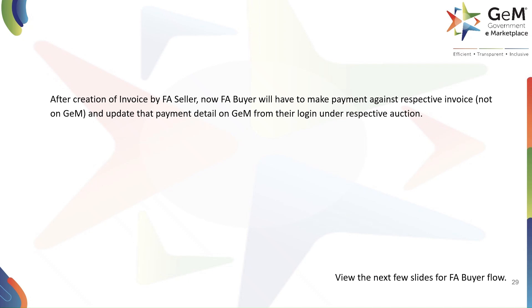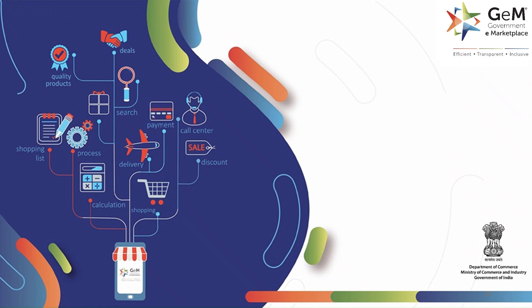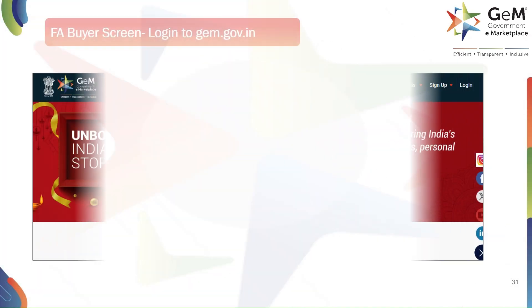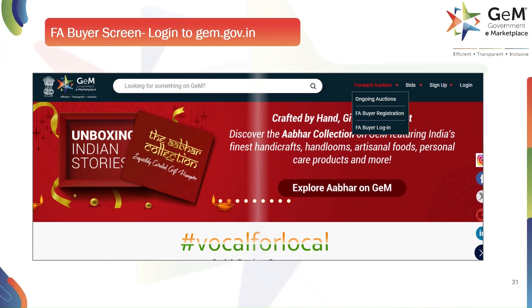After you, the FA seller, have created and submitted the invoice, the FA buyer will need to make the payment. It's important to note that this payment is not made directly on the GeM portal. The buyer will then log into their account and update the payment details against the respective auction, confirming that the payment has been made. Now let's switch gears and follow the process from the perspective of the FA buyer — managing payment details by FA buyer and its verification by FA seller.